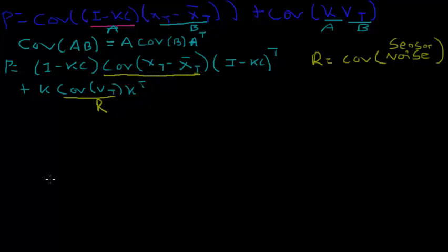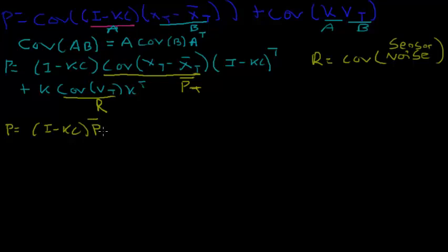Second, the covariance of (x_t minus x_bar_t): we define p as the covariance of (x_t minus x_hat_t), but there's also p_bar, which is the covariance of (x_t minus x_bar_t) — using x_bar_t instead of x_hat_t. So this term is p_bar(t). We can now rewrite p as (I minus KC) times p_bar(t) times (I minus KC) transpose, plus K R K transpose.